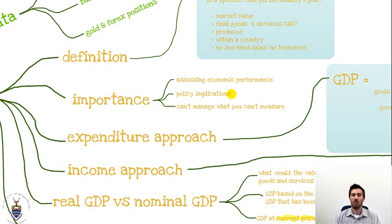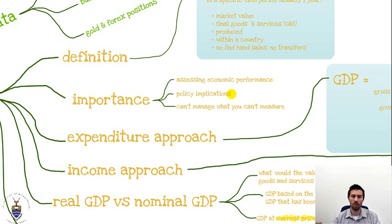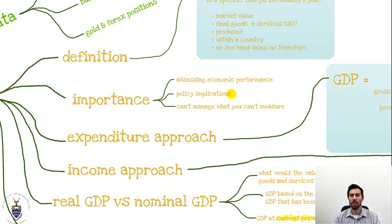We'll talk more about that later. If we can assess our GDP performance, it gives the government an idea of how it should be interfering in the economy — how it should be redirecting resources, what it should be taxing, subsidizing, and encouraging. In other words, it has policy implications. You can't manage what you can't measure, so first we need to measure how well the economy is doing, and then we can step back and decide what needs to be done to try to make it run better.